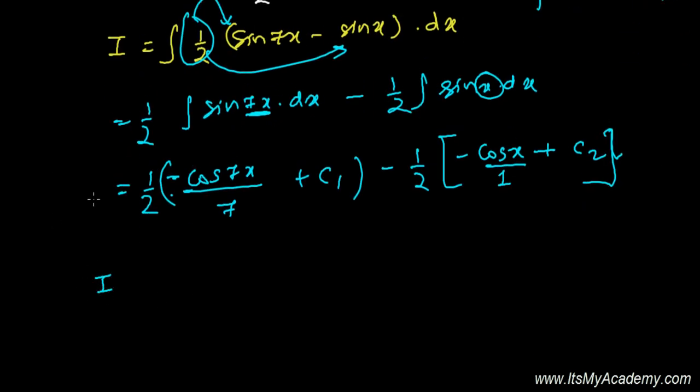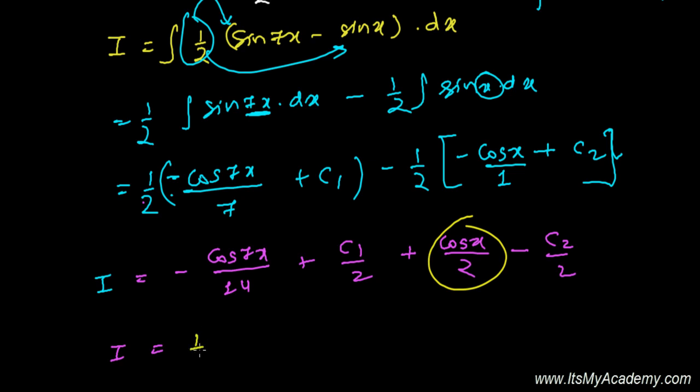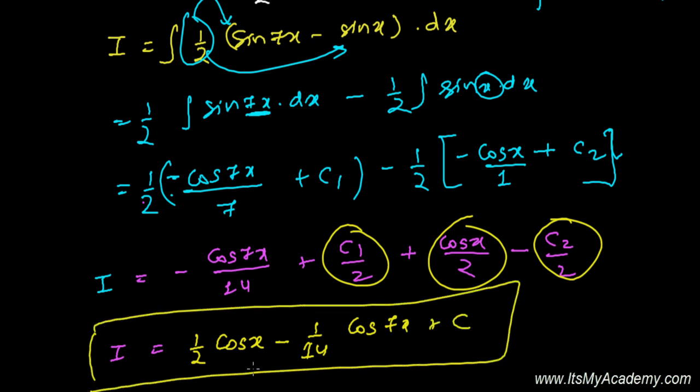So now let's give the finalization. So our integration is 2 times 7 is 14, so cosine of 7x divided by 14 plus C1 by 2, minus minus minus, plus cosine of x by 2, and minus C2 by 2. And our final answer is, let me write this first: one by two cosine of x minus one by 14 cosine of 7x, and these two are arbitrary constants, so let's write C. And that's our solution.